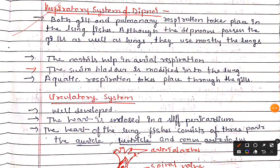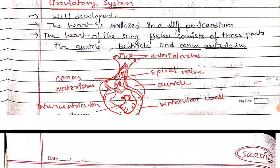Both gill and pulmonary respiration take place in lung fishes. Although Dipnoans possess gills as well as lungs, they use mostly the lungs. The nostrils help in aerial respiration. The swim bladder is modified into the lung in Dipnoi. Aquatic respiration takes place through the gills.